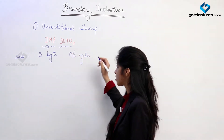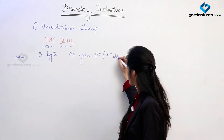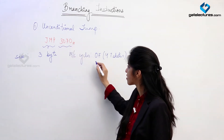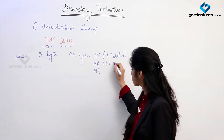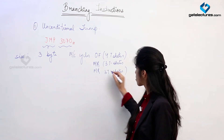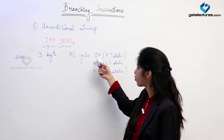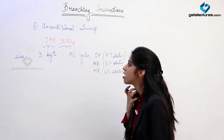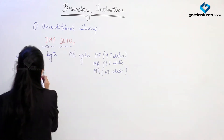The first machine cycle is opcode fetch of 4 T-states. Then we are having two memory read cycles for reading the address, each of 3 T-states. So the total length of this instruction is going to be 10 T-states. Now let us look at the jump instruction with an example.